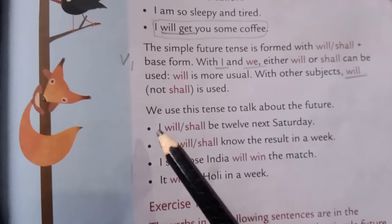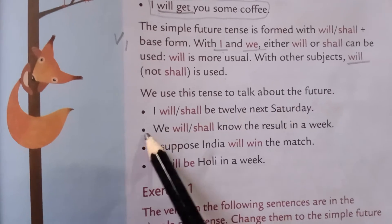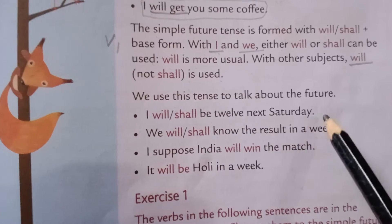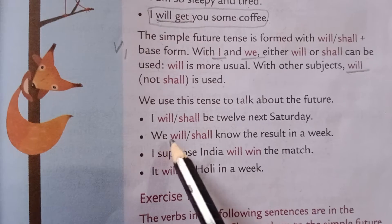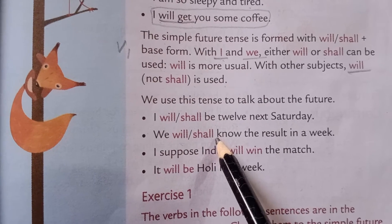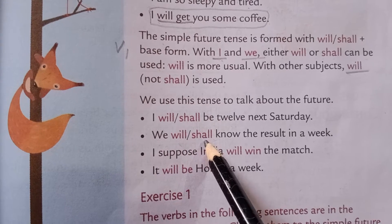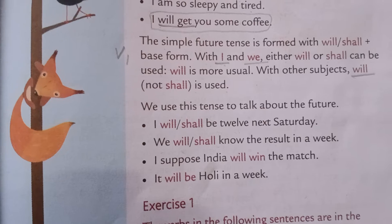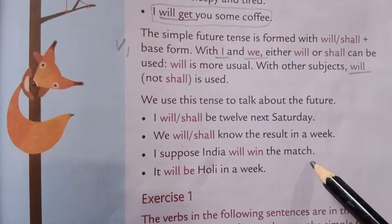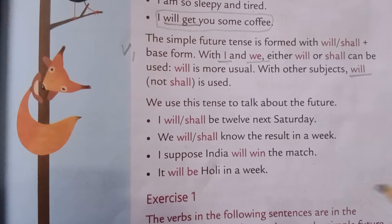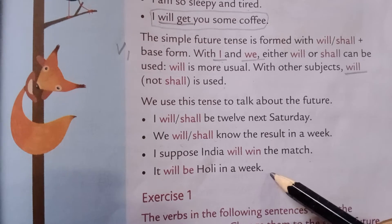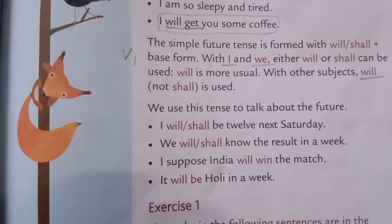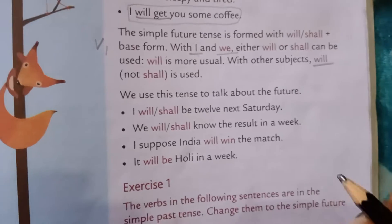Here are some more examples. We use this tense to talk about the future. 'I will/shall be 12 next Saturday' — main agle Saturday tak bara saal ka ho jaun ga. 'We will/shall know the result next week' — hamei humara result agle hafte pata chal jayega. 'I suppose India will win the match' — abhi jita nahi hai. 'It will be Holi next week' — aane wale hafte mein Holi hai, abhi nahi ho raha hai.